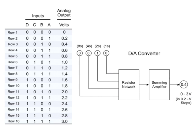The voltage reaches 3 volts when the binary input is 1, 1, 1, 1.